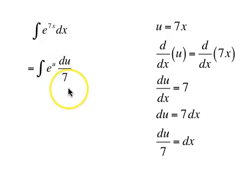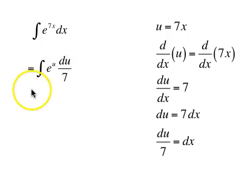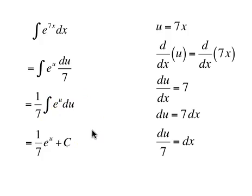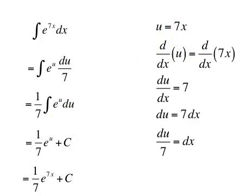du over 7 is really 1/7 times du, so we can pull the 1/7 constant out in front of the antiderivative sign. We get 1/7 times the integral of e to the u du. The antiderivative of e to the u is e to the u plus c. But u is 7x, so our final answer is 1/7 times e to the 7x plus c.